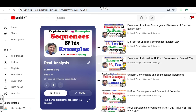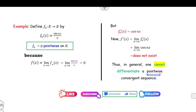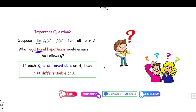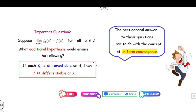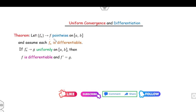So what additional hypothesis is needed so that if each fn is differentiable and fn converges to f, then f is also differentiable? The answer is given in terms of uniform convergence. The theorem states: if fn converges to f pointwise, each fn is differentiable, and fn' converges to g uniformly, then f is differentiable and f' = g.